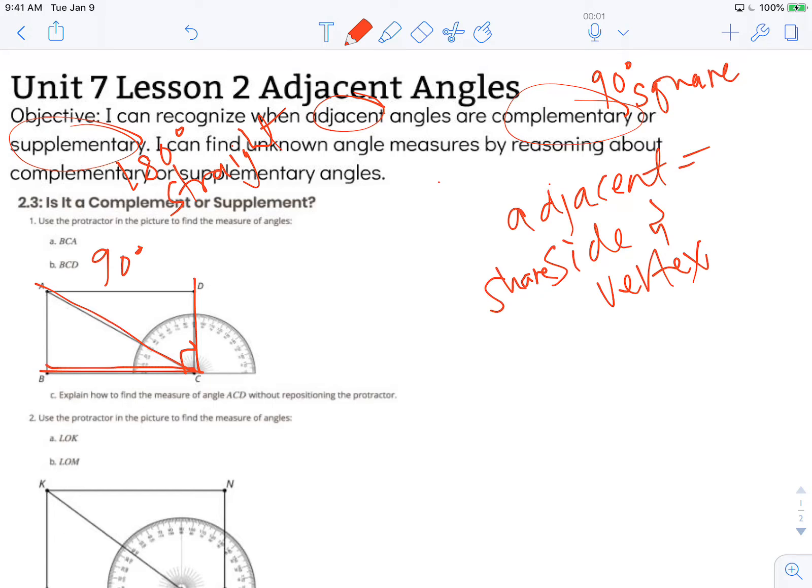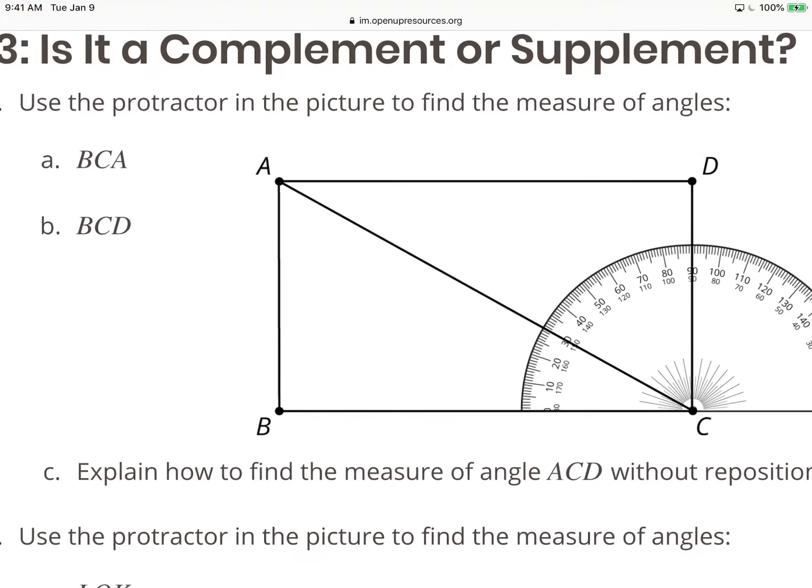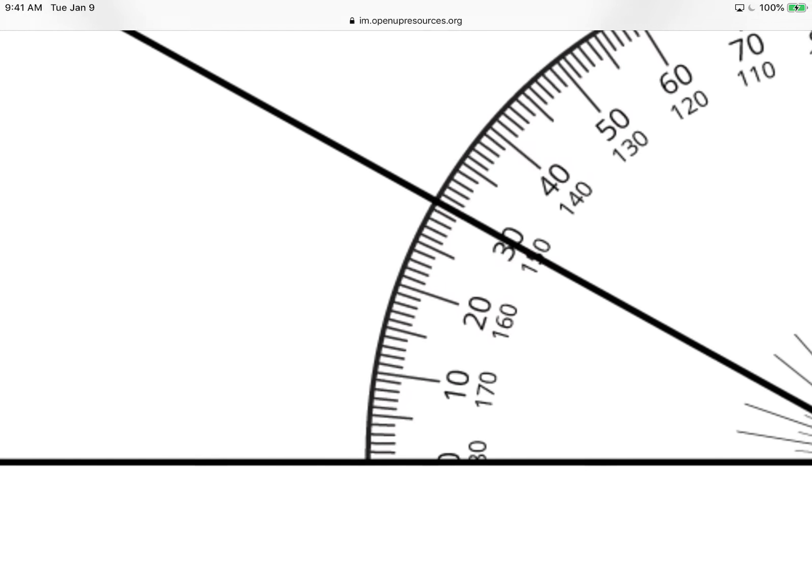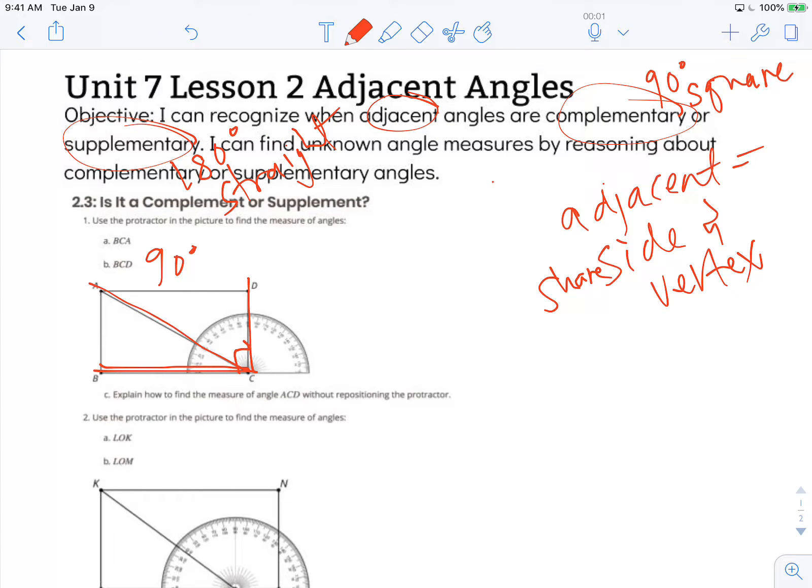Now, BCA, we're going to pop over to the website to get a clear image. You can see that for BCA, I have one of two options: either 30 degrees or 150 degrees. So, using my reasoning, I know that together, BCA makes a 90 degree angle.